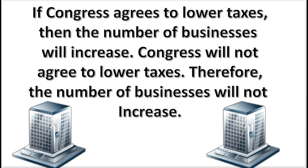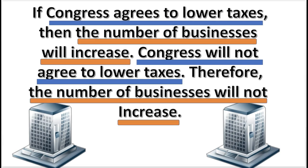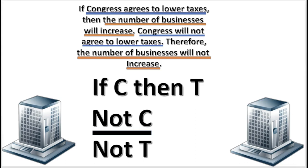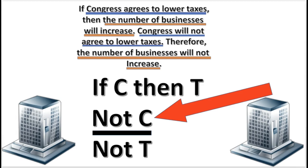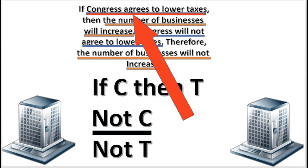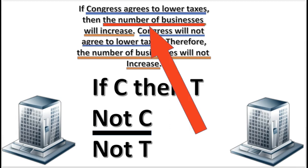Now that you see the argument, to identify the form of the argument, we begin by comparing the statements. Notice that the second premise is the negation of the antecedent in the first premise, and the conclusion is the negation of the consequent. So the form of the argument is like this. Notice that C and T stand for whole statements — C stands for 'Congress agrees to lower taxes,' and T stands for 'the number of businesses.'